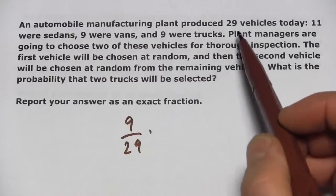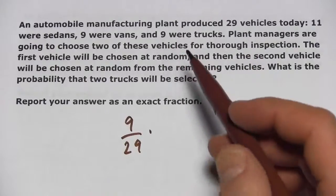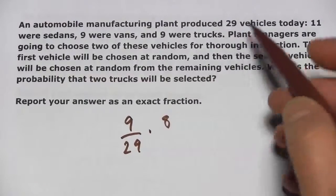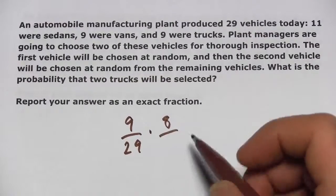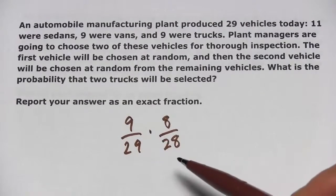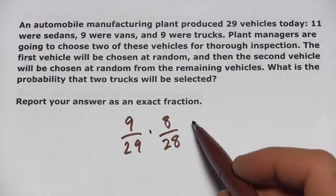The second one, well, there are fewer trucks if you picked a truck the first time. So, there are 8 trucks remaining, and there are fewer vehicles because you picked out one of the vehicles. There are only 28 vehicles remaining. So, this comes down to 9 out of 29 times 8 out of 28.